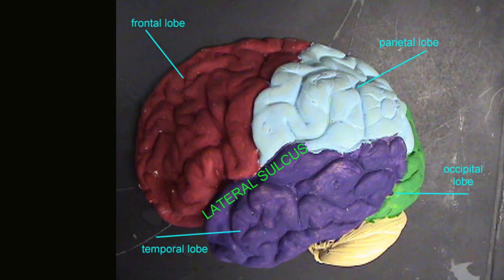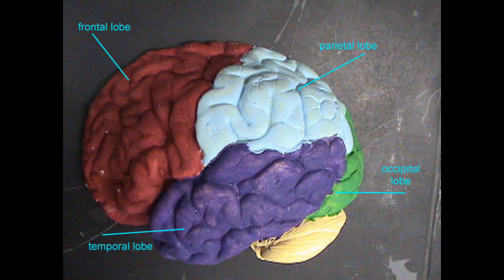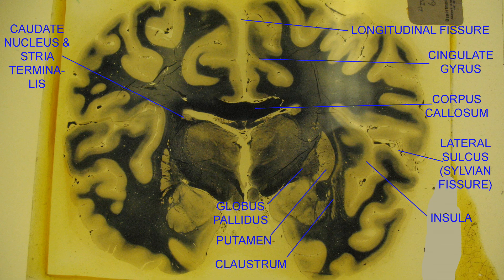This lateral sulcus separates the temporal lobe of the cerebrum from the parietal and frontal lobes. If you were to pull from this structure to expose what lies beneath, you would see a layer of cerebral cortex which is normally hidden from view.